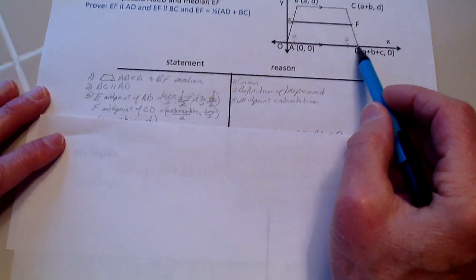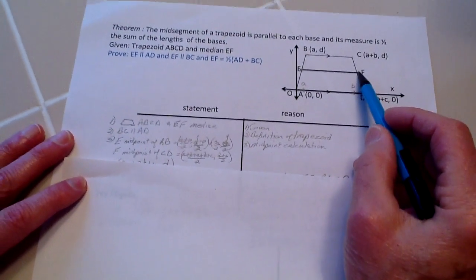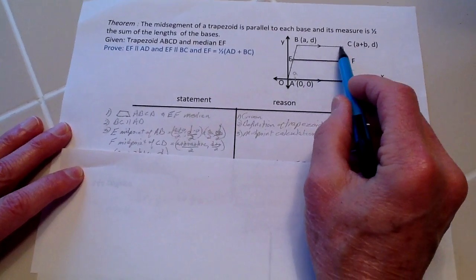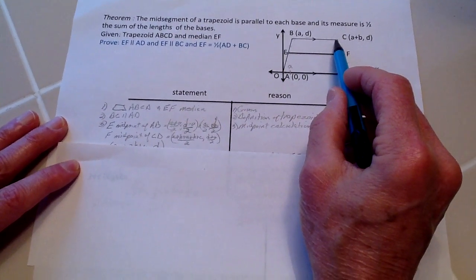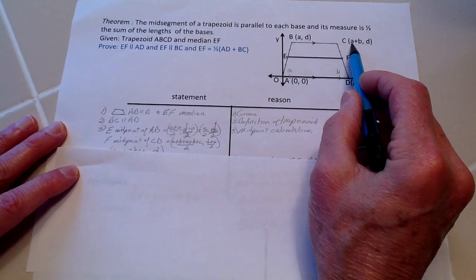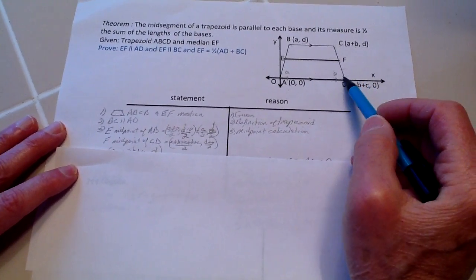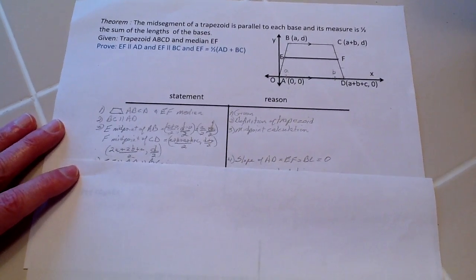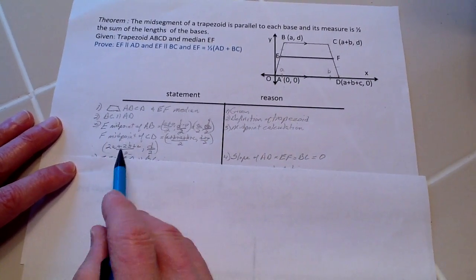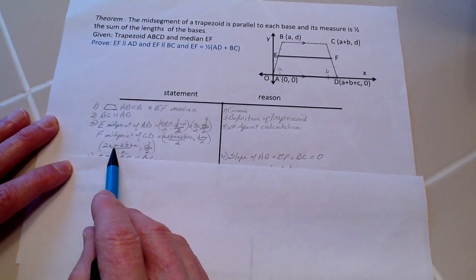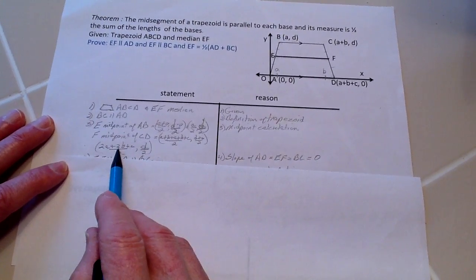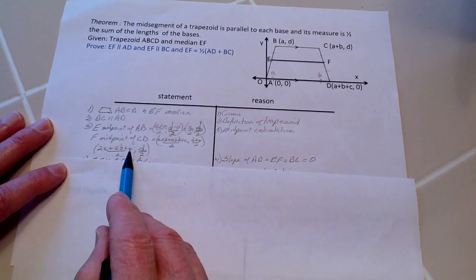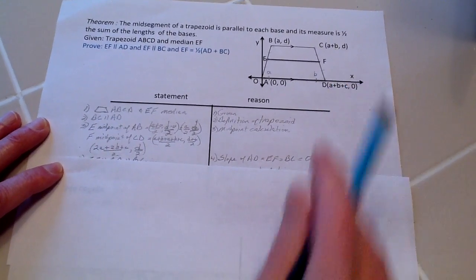And so now from F, we have to remember we have this length right here is a total length of A plus B. And then the D is the height again as we saw earlier on this side. And so therefore the midpoint here is going to be 2A plus 2B plus C over 2 and one-half D.